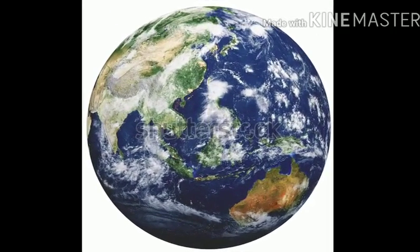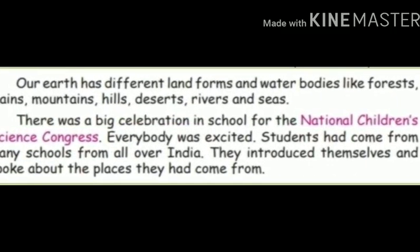Where are we living? We are living on earth. Our earth has different landforms and water bodies like forests, plains, mountains, hills, deserts, rivers, and seas.